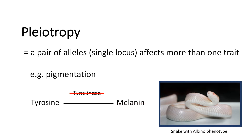The albino snake is white, but you can also see that the eyes are red. So it is not only one trait that is affected by tyrosinase — it is more than one trait.